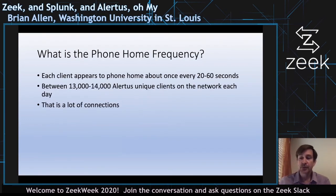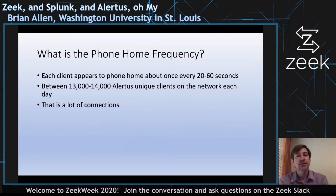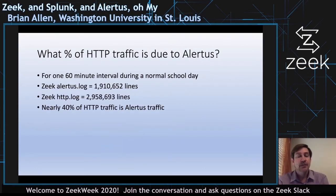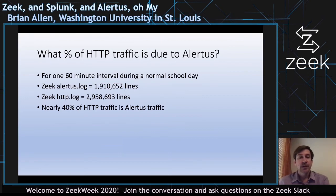How often does this thing phone home? Our Alertus administrator thought it phones home about every 90 seconds, but in our Zeek logs it looks like many of these are phoning home about every 20 to 60 seconds. In the last day I counted about 13,000 to 14,000 unique Alertus clients on the network — a lot of connections. It was really filling up our HTTP log. Almost 2 million lines in the last hour of Alertus traffic, and the HTTP log had just under 3 million lines total — so almost 40% of HTTP traffic is Alertus traffic. There was just too much in the HTTP log, so we wanted to break this out into its own separate log file.